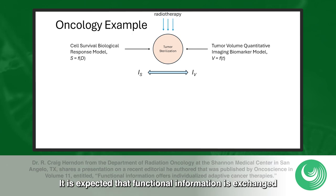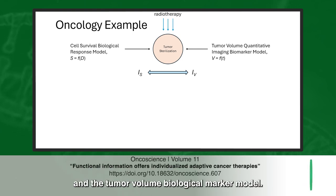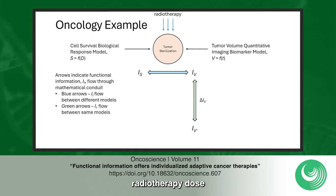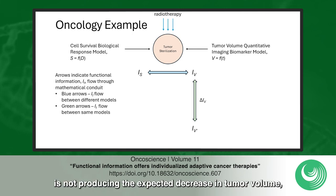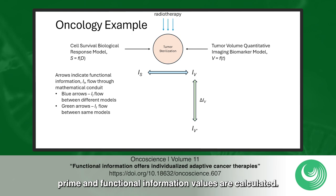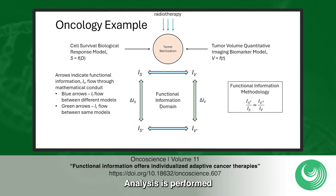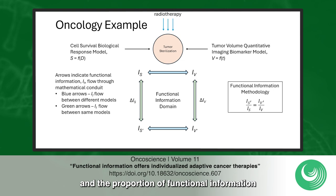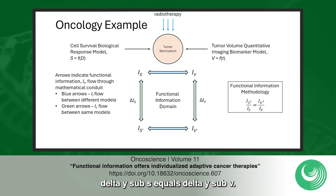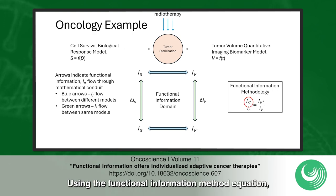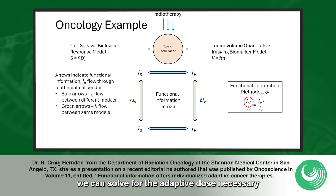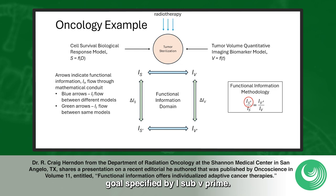It is expected that functional information is exchanged between the cell survival biological response model and the tumor volume biological marker model. If the biomarker data reveals the current radiotherapy dose is not producing the expected decrease in tumor volume, then the curvature of the model V is adjusted to the desired goal V', and functional information values are calculated. Analysis is performed in the functional information domain, and the proportion of functional information change between the initial and adapted models is the same — i.e., delta I sub S equals delta I sub V. Using the functional information method equation we can determine I sub S', and from I sub S' we can solve for the adaptive dose necessary to produce the tumor volume reduction goal specified by I sub V'.